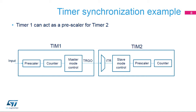This slide shows a simple example of timer synchronization. Timer 1 is used as the master timer and can reset, start, stop, or clock Timer 2 configured in slave mode. In this example, Timer 1 is clocking Timer 2 so that it acts as a pre-scaler for Timer 2.